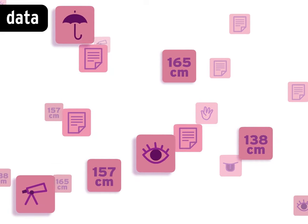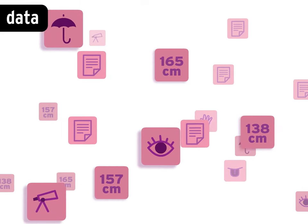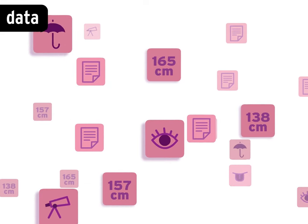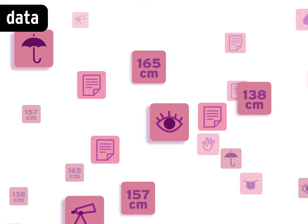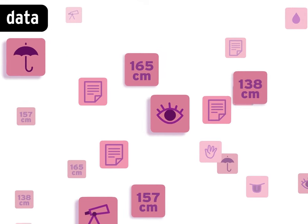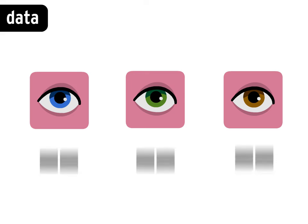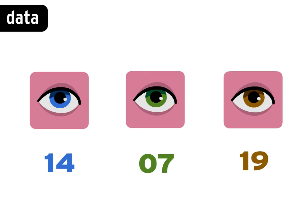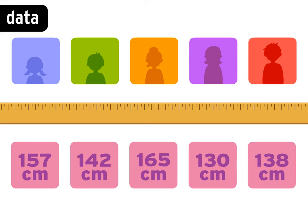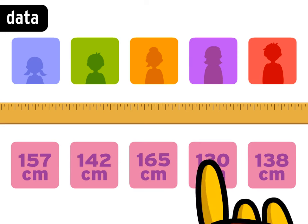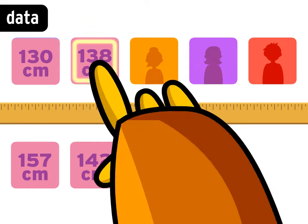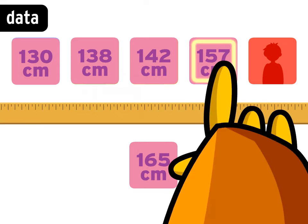There are two main types of data. One kind counts each item or event that falls into a certain category, like if you counted how many kids in your class have each different eye color. Then there's the kind of data that's made up of measurements that fall along a spectrum, like if you measured the height of every kid in your class.